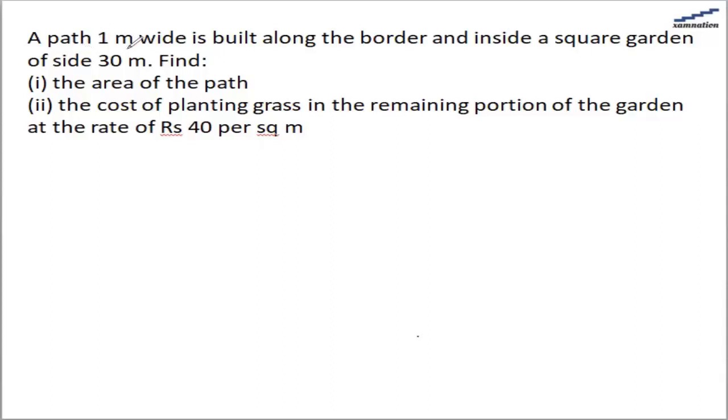In this question, we are told a path of 1 meter wide is built along the border inside of a square garden. So there is a square garden of side 30 meter and we need to build a path inside the square garden, and this path should be 1 meter wide.